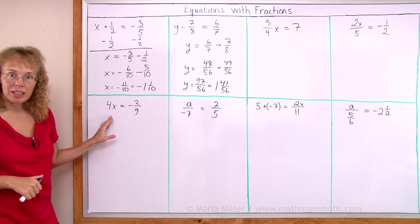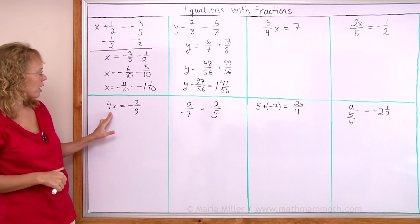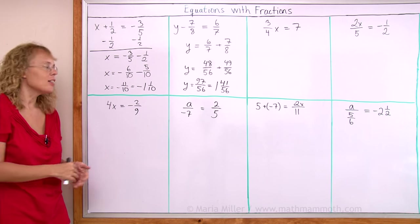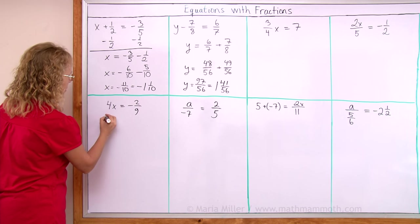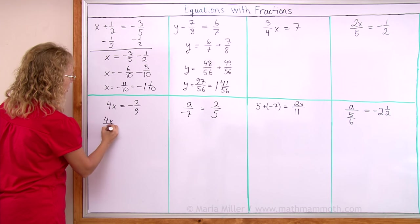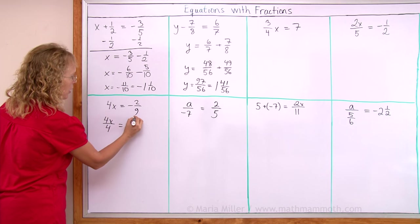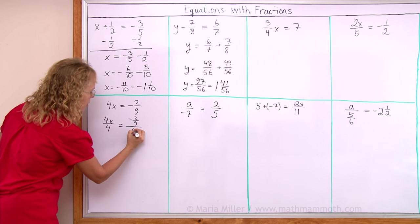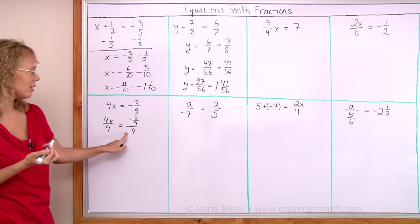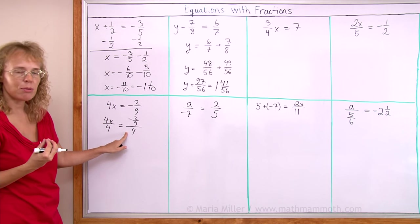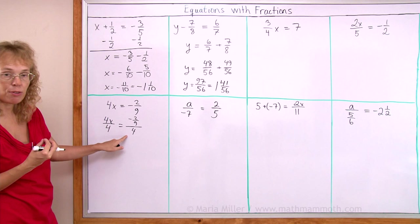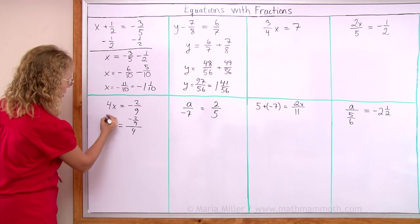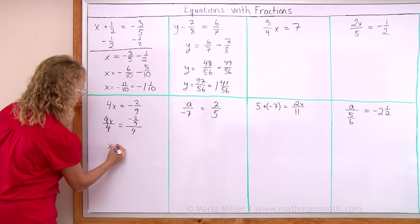This here is a multiplication equation, that's four times the variable. To solve it we will divide both sides by 4. We will write 4x over 4 equals now this negative fraction over 4. It's a complex fraction but all it means is this fraction divided by 4. Here the 4s cancel so we have x now isolated alone.